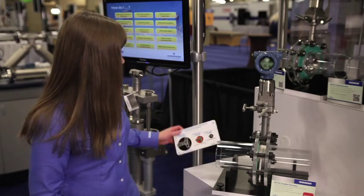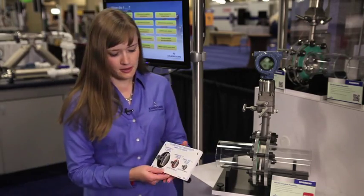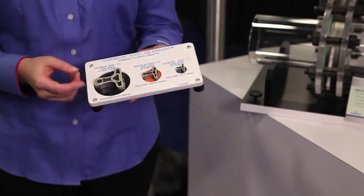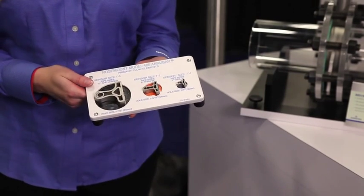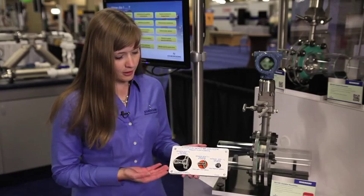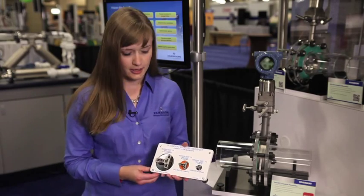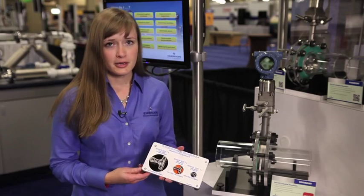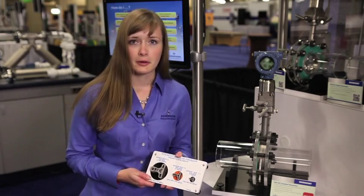First we'll look at the 485 Primary Element. The T-shaped design provides a small profile in the pipe so that lowers permanent pressure loss and conserves energy. It also gives an accuracy of 0.75% while providing the most DP out of any averaging pitot tube on the market.